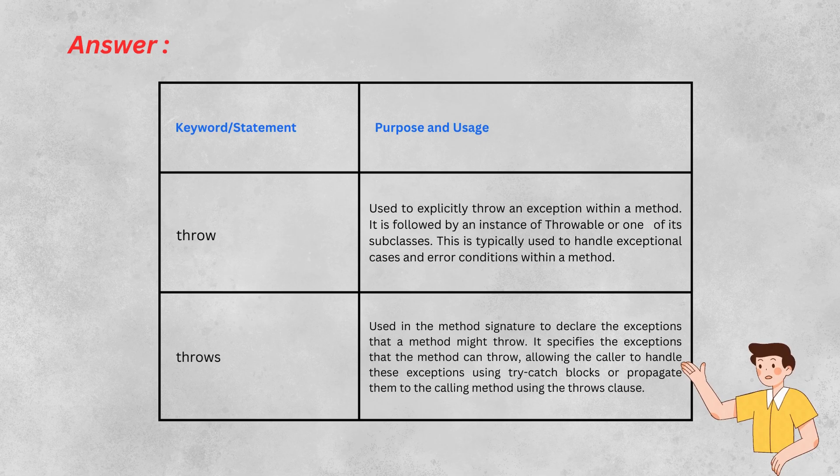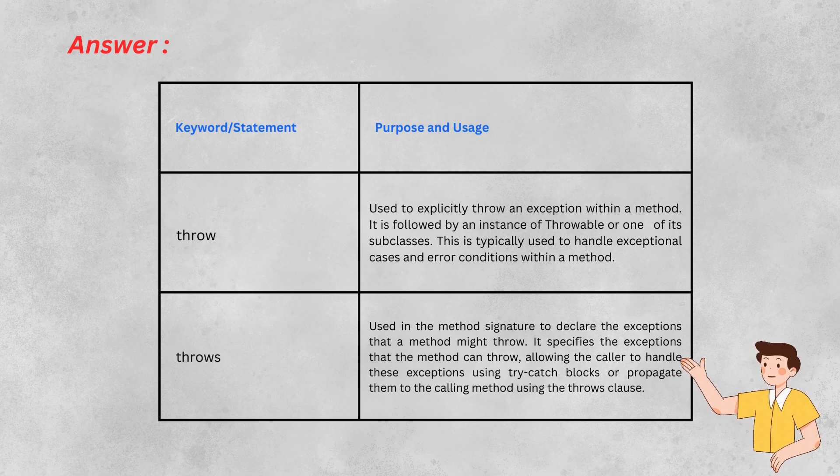On the other hand, throws is used in a method signature to declare the types of exceptions that the method might throw, informing the caller to handle these exceptions using try-catch blocks or further propagate them.